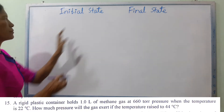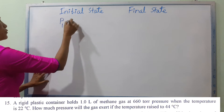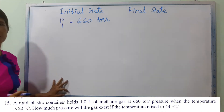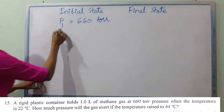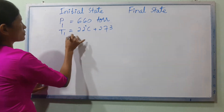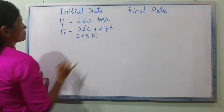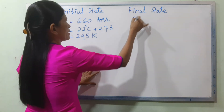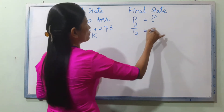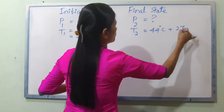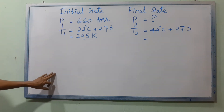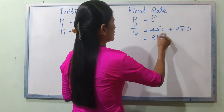In the initial state, P1 is 660 torr. T1 is 22 degrees Celsius plus 273, equal to 295 Kelvin. In the final state, the temperature is 44 degrees Celsius plus 273, equal to 317 Kelvin.